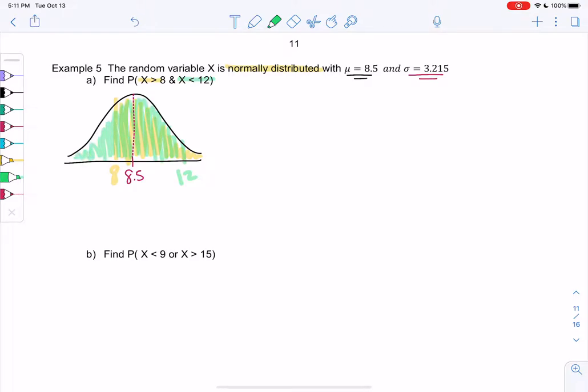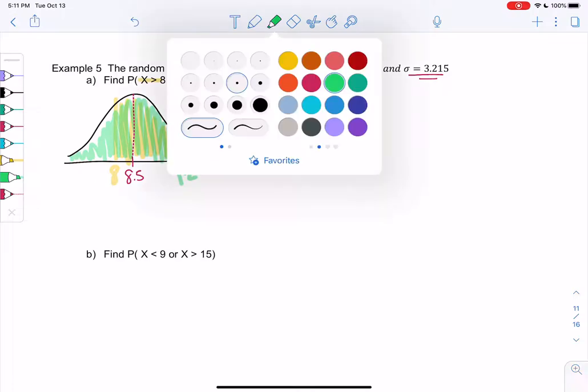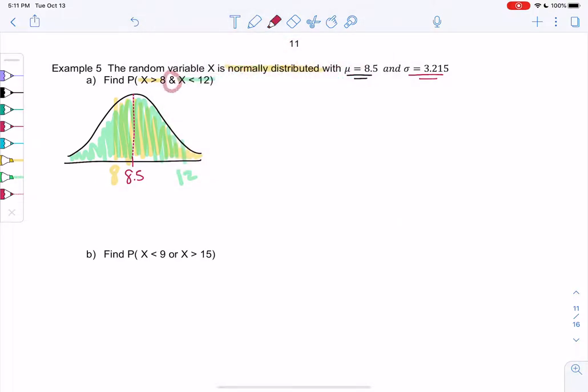And this one's really hard without drawing the curve. So and means overlap. So what parts did I shade for both? So that'll be the middle.